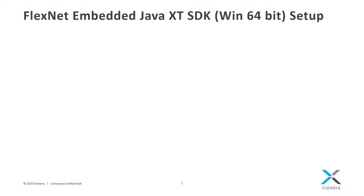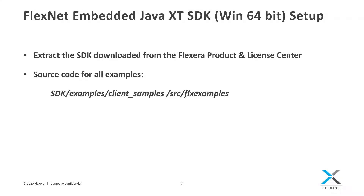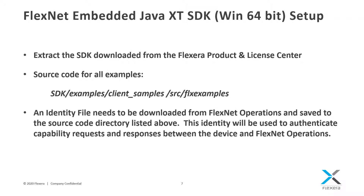I'm going to be demonstrating the FlexNet Embedded Java XT SDK on a 64-bit Windows system using Eclipse. First, extract the SDK downloaded from the Flexera product and license center. The source code for all examples can be found in the SDK examples client samples source flex examples directory. In order to run the examples, an identity file needs to be downloaded from your FlexNet Operations evaluation instance and saved to the source code directory listed above. This identity file will be used to authenticate the capability requests and responses between the device to be licensed and FlexNet Operations. I will now show how to perform this task.